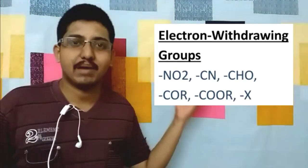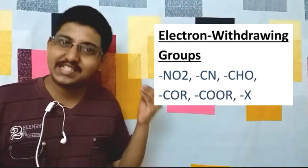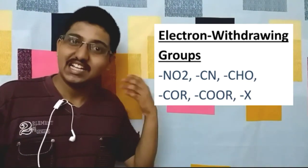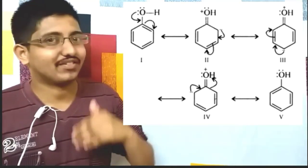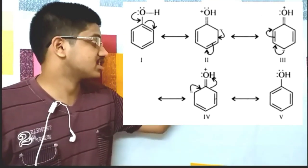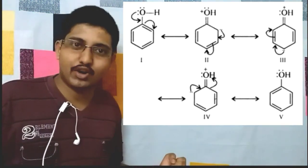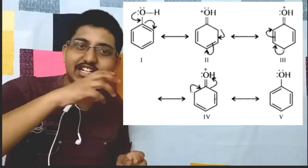Now let's discuss phenol derivatives — specifically the acidic nature of various substituted phenols. When electron withdrawing groups like NO2, CHO, CN, COOR (esters), ketones, and halogens are attached to the benzene ring, they increase the acidic strength of phenols. This is due to the +R and -I effects of these electron withdrawing groups, especially at ortho and para positions, which makes the O-H bond easier to break and hydrogen easier to remove.